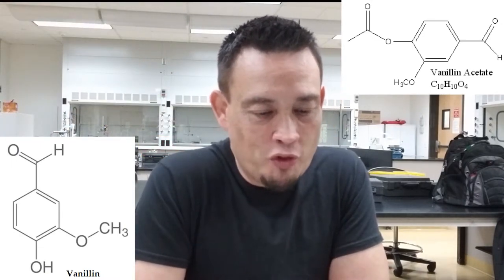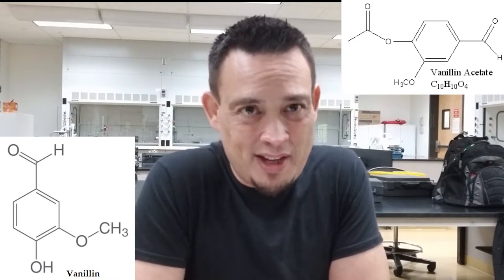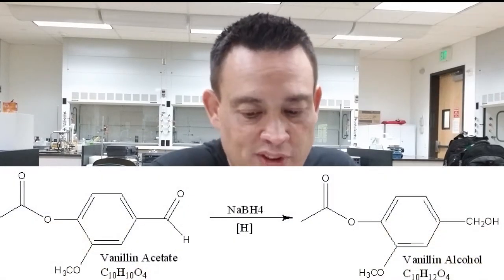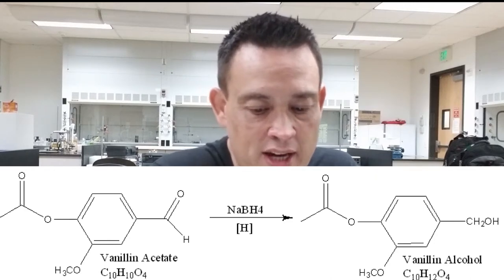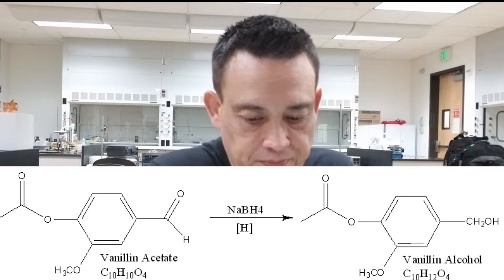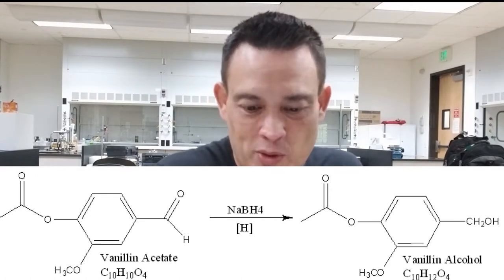Normal vanillin has an OH on it, whereas this one has the acetate, so we call it vanillin acetate. Looking at the functional groups, we have an ester and an aldehyde in the same compound. It works out that if we use sodium borohydride we will selectively reduce the aldehyde and maintain the ester. That's the basic gist of what's going on today.